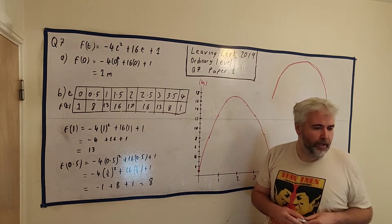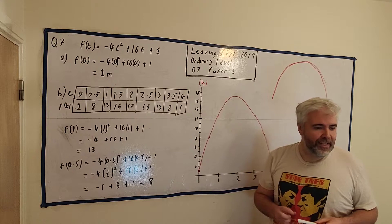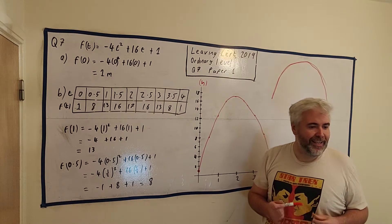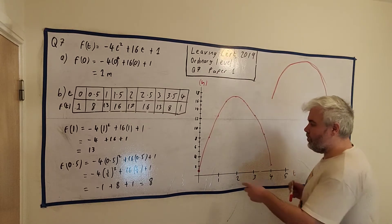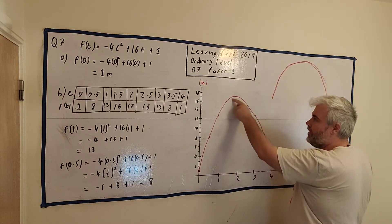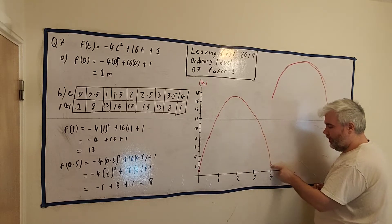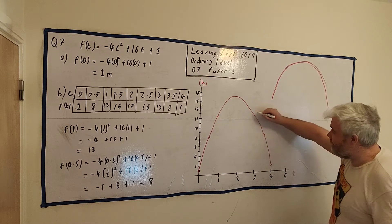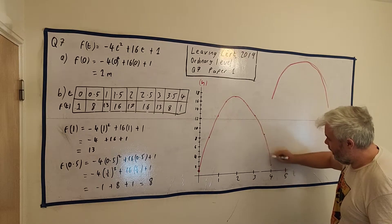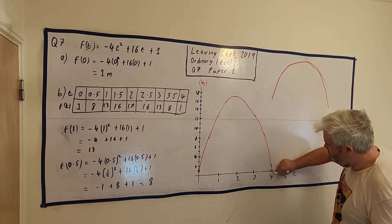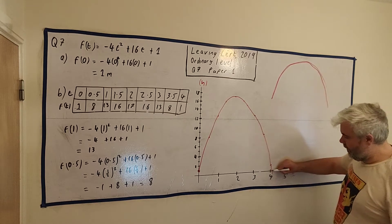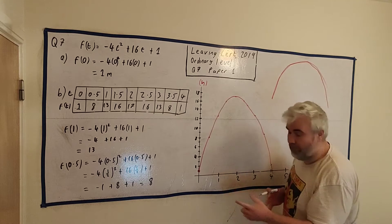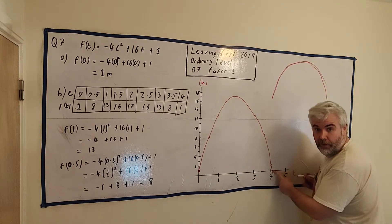Part C part one asks us the length of time the ball was in the air, from when it was hit until it landed on the ground. So it's hit here, it's in the air, and it doesn't end at t = 4 in our table — it continues on. So we're being asked to estimate what the shape of this curve looks like as it comes down to the ground.